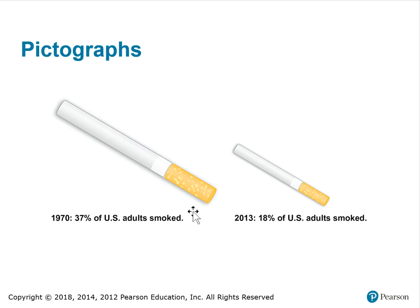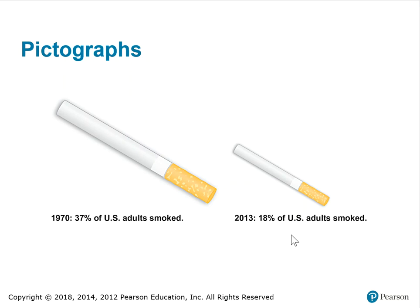These are three-dimensional objects, cylinder in shape basically. It looks like the cigarette on the right is much smaller than the cigarette on the left — less than half the size for sure. But if you notice, the percentages: in 1970, 37% of U.S. adults smoked, while in 2013, 18% of U.S. adults smoked. If this was an accurate pictorial representation of the relationship between the 1970 percentage and the 2013 percentage of smokers, then the picture on the right would only be half as big as the picture on the left. But it does appear to be much smaller.